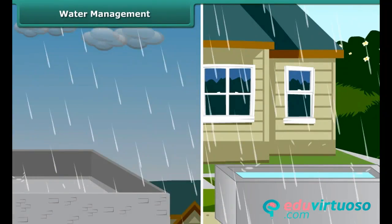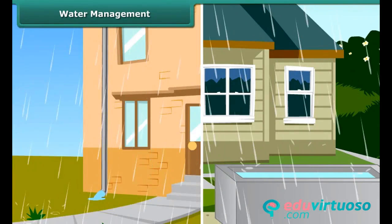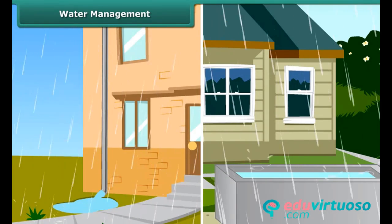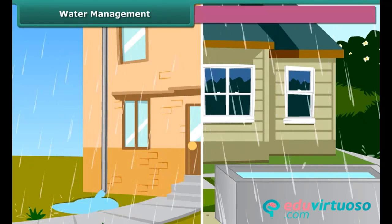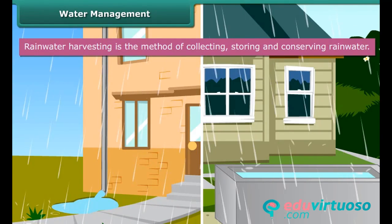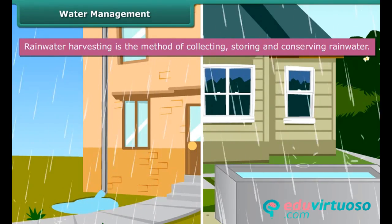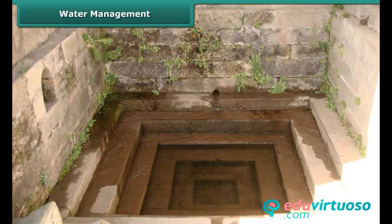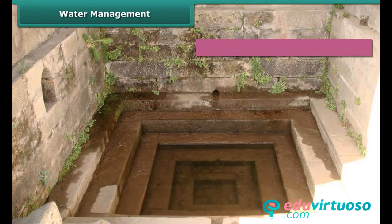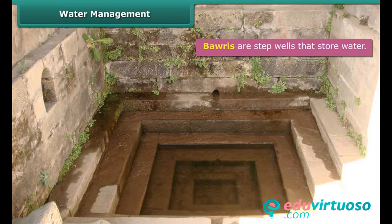If we collect and store all the rainwater that falls on terraces, roads and pavements instead of letting it run into ditches, we could have vast reserves of water. Collecting, storing and conserving rainwater is called rainwater harvesting. Bavari — the traditional way of collecting water — can be revived. Bavari are step wells that store water, which can be reached by descending a few steps. Bavari can also be multi-storied.